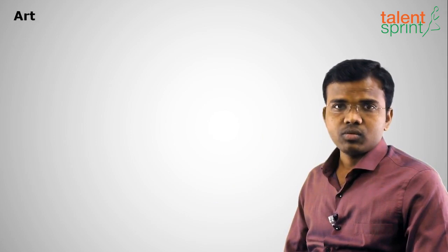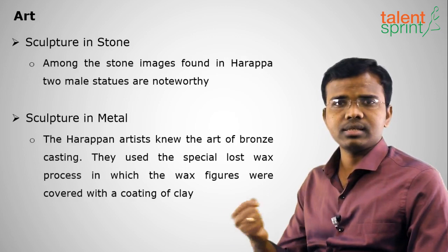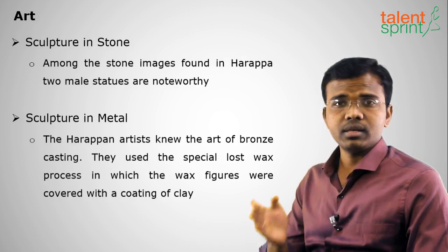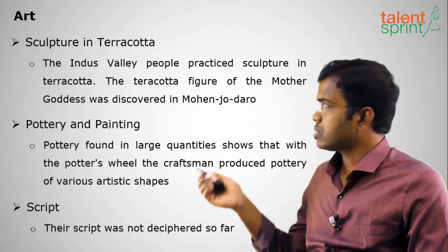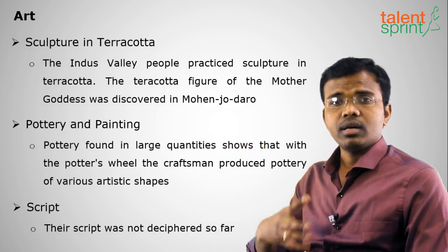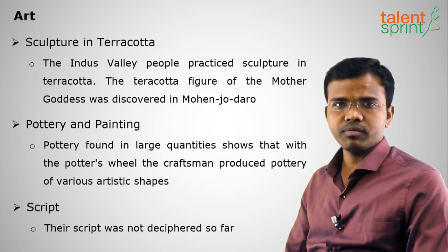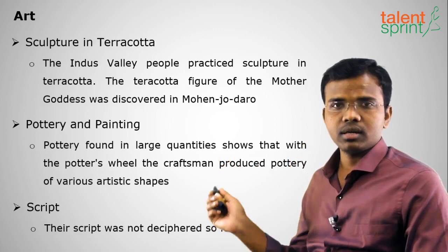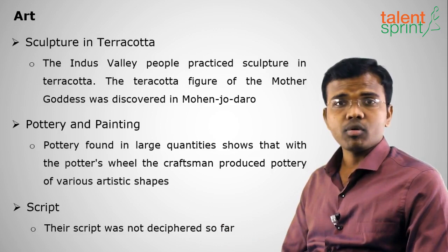Regarding art, the Indus Valley people created sculptures in stone — engraved on stone seals like the Pashpatinath seal. In metal (bronze), notable examples include the Dancing Girl and the Bearded Man. In terracotta — meaning fire-baked earthen clay — figurines of the Mother Goddess were excavated at Mohenjo-daro.